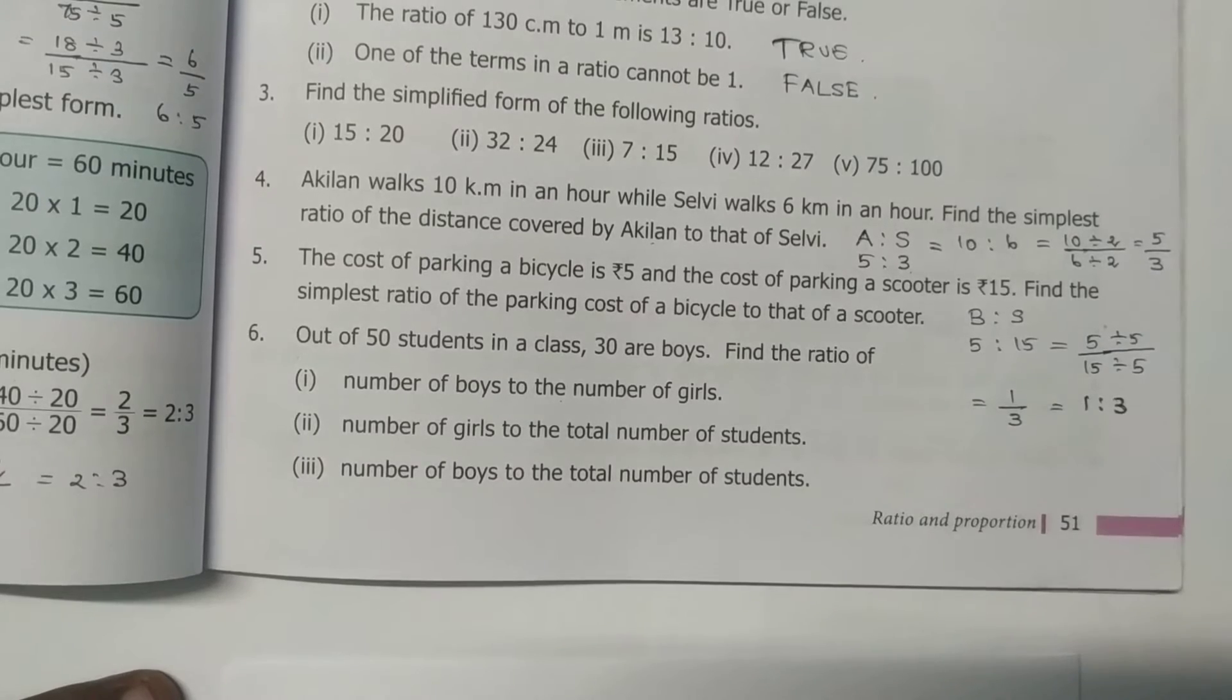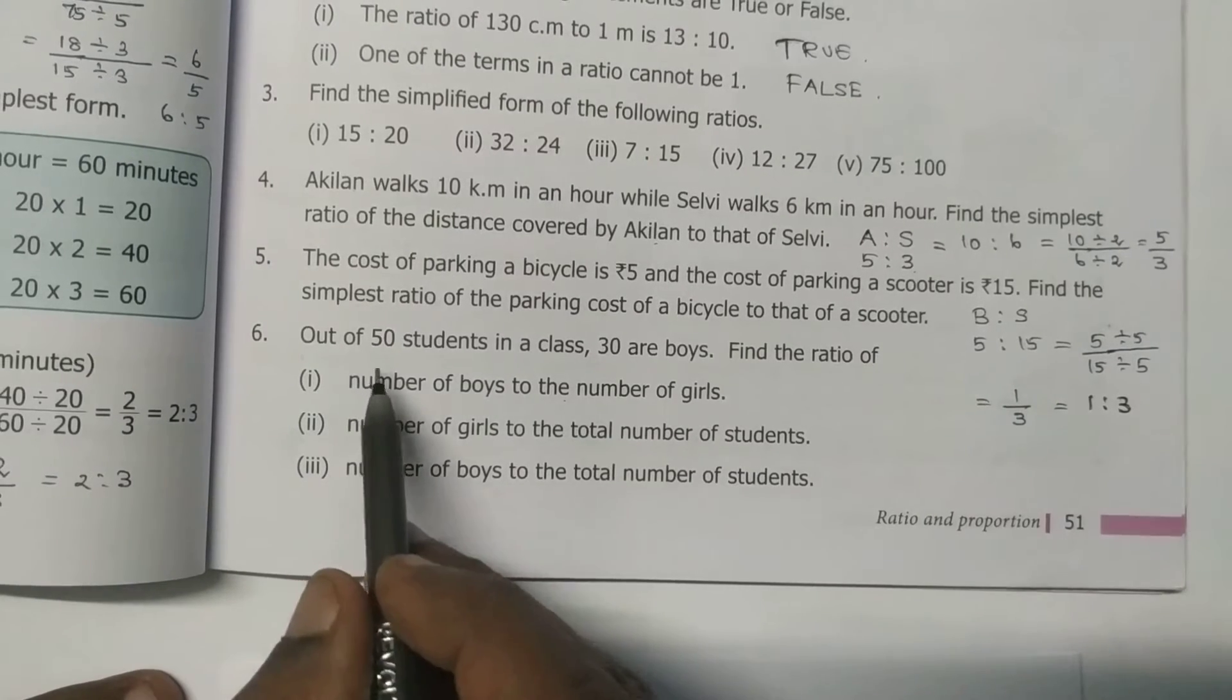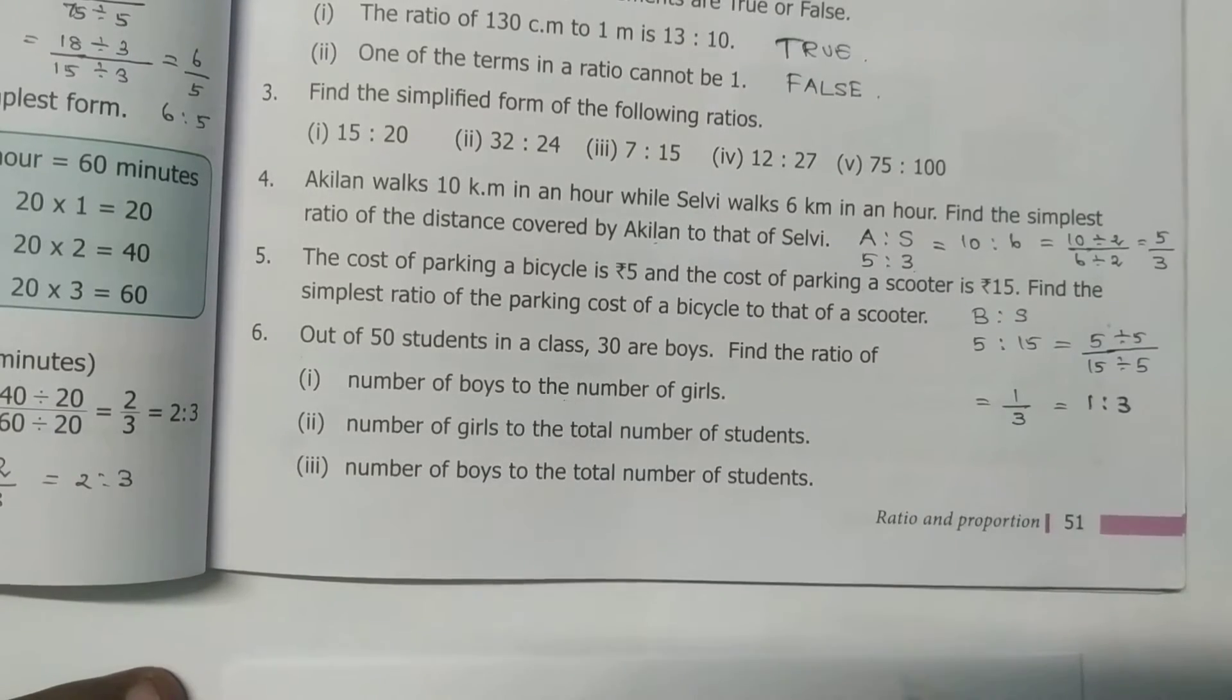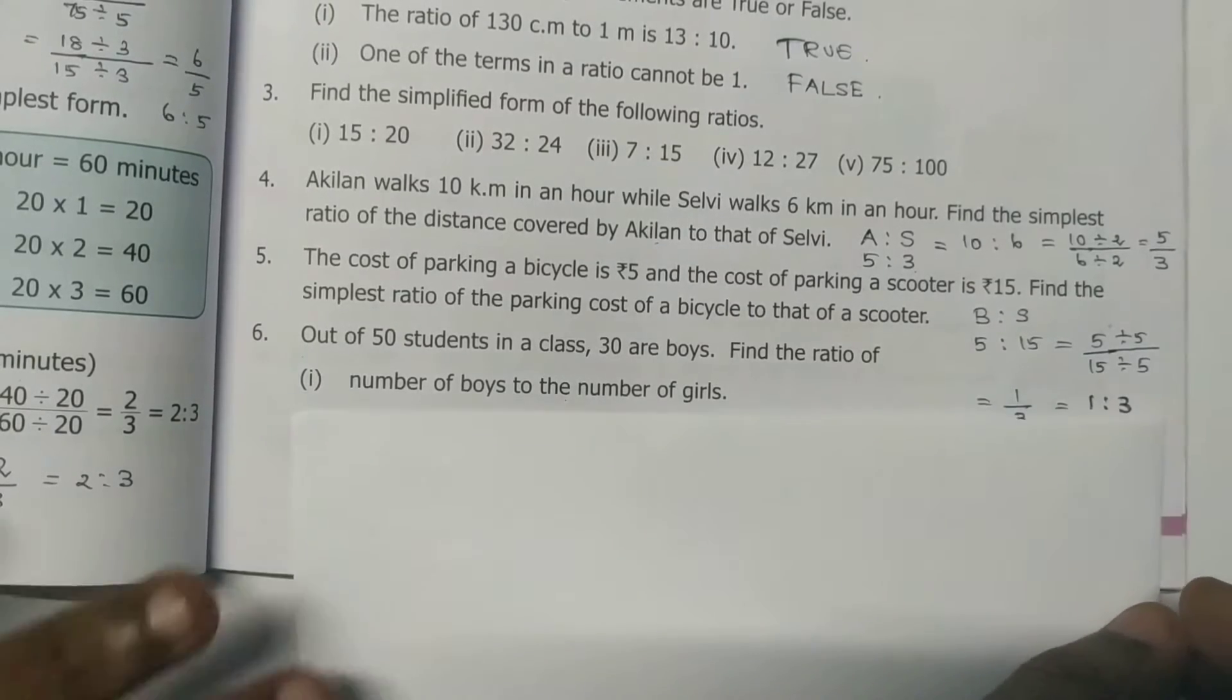Exercise 3.1, question 6. Out of 50 students in a class, 30 are boys. Find the ratio: first one, number of boys to the number of girls.